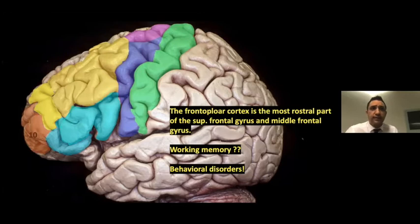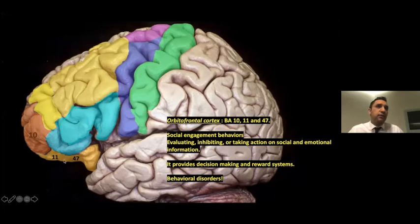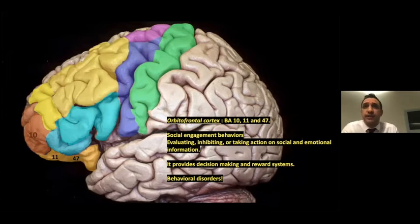The frontal polar cortex encompasses the frontal part of the superior frontal gyrus and the middle frontal gyrus. Its function is suspected to relate to working memory, behavioral disorders, and personality. The orbitofrontal cortex corresponds to Brodmann areas 10, 11, and 47, sitting on the frontal base. It is related to social and emotional behaviors, inhibiting or facilitating action on social and emotional information, decision making, reward systems, and behavioral disorders.